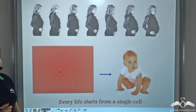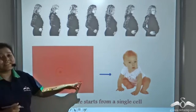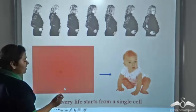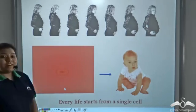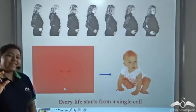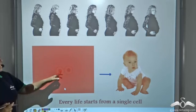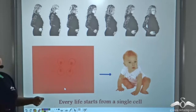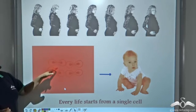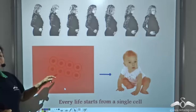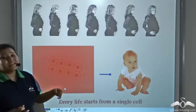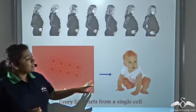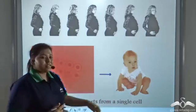Every life starts with a single cell. Even human beings, we were a single cell at first. The single cell divided to form two cells, two formed four, four formed eight, and this process continued until a baby is born.